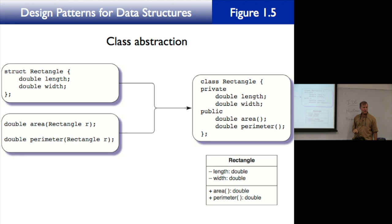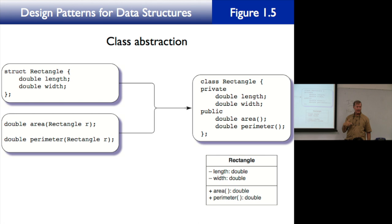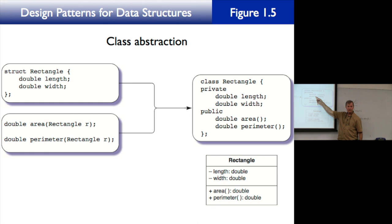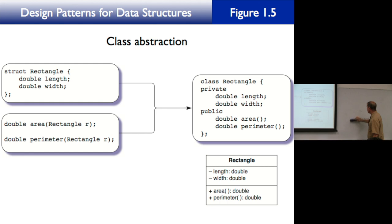Area and perimeter are public so the user can access them. But with this setup, you cannot say 'myRectangle.length = 3.7' because length is private. However, you can say 'cout << myRectangle.area()' because area is public.